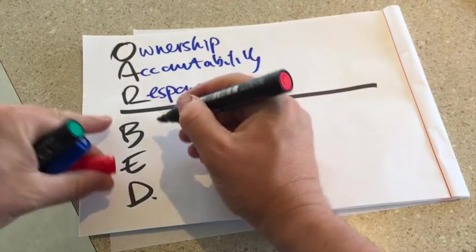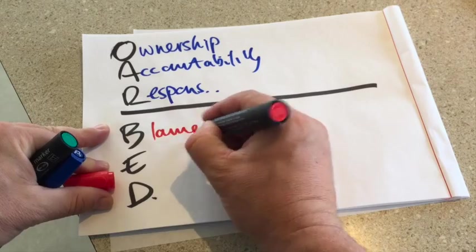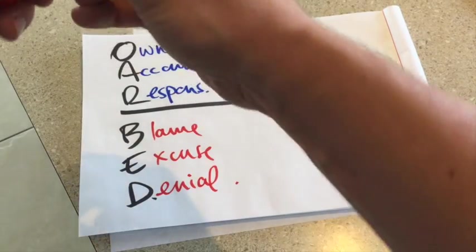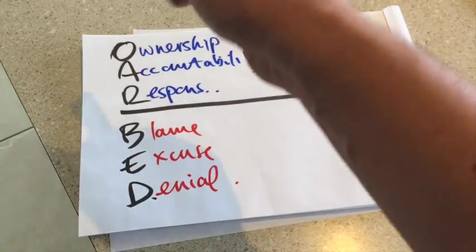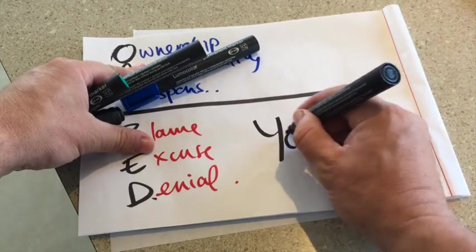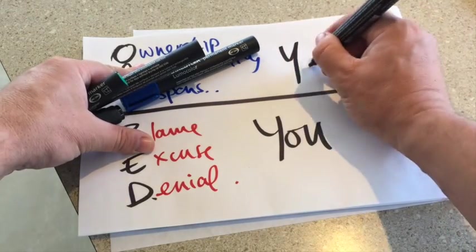Below the line behavior is where we do a thing called blame, excuse, and denial. But guess what, all of this is stemming from one big problem and that big problem down here is you. But the good news is the big solution at the top is also you.